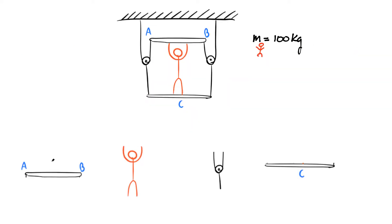I've set up all the different components of the problem: platform AB, the man, the pulley, and platform C. The mass of buddy in red is 100 kg. Let's start by looking at all the forces acting on platform AB. First, there's a force due to the guy pushing up on it — let's call that F. There's also a rope with a string attached on each side, and whenever there's a string there's a tension. Let's call that T1 — T1 on both sides. Those are the only forces on platform AB.